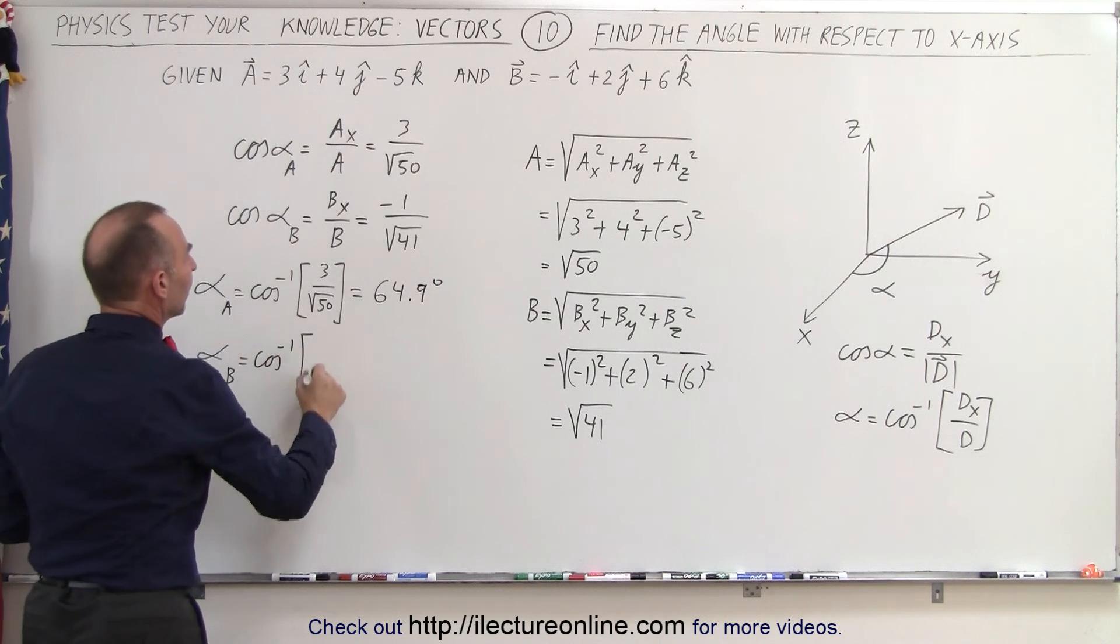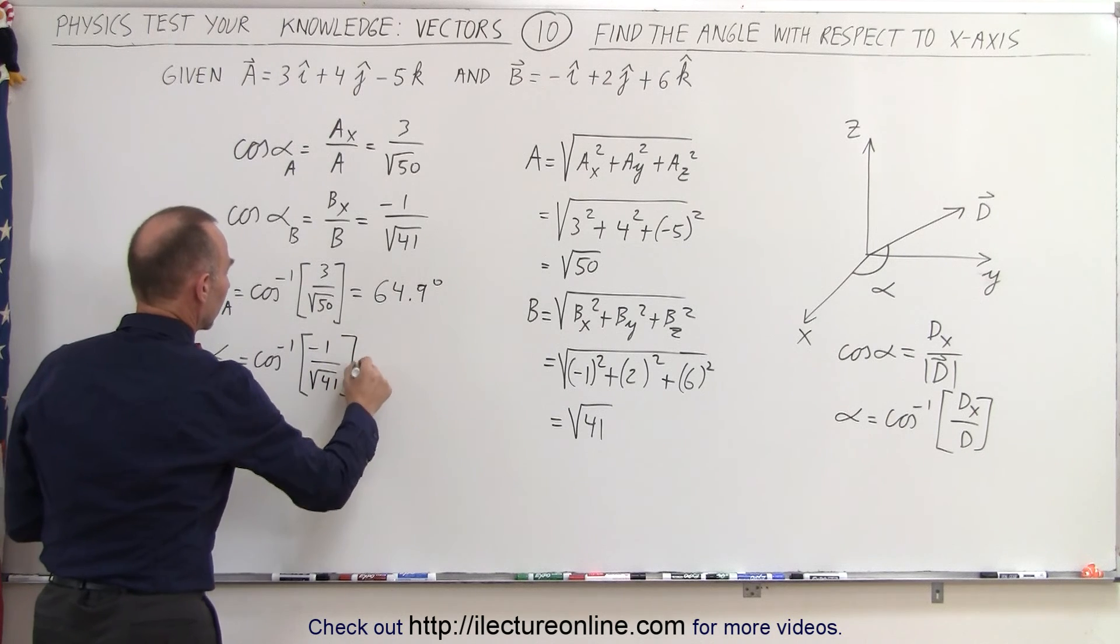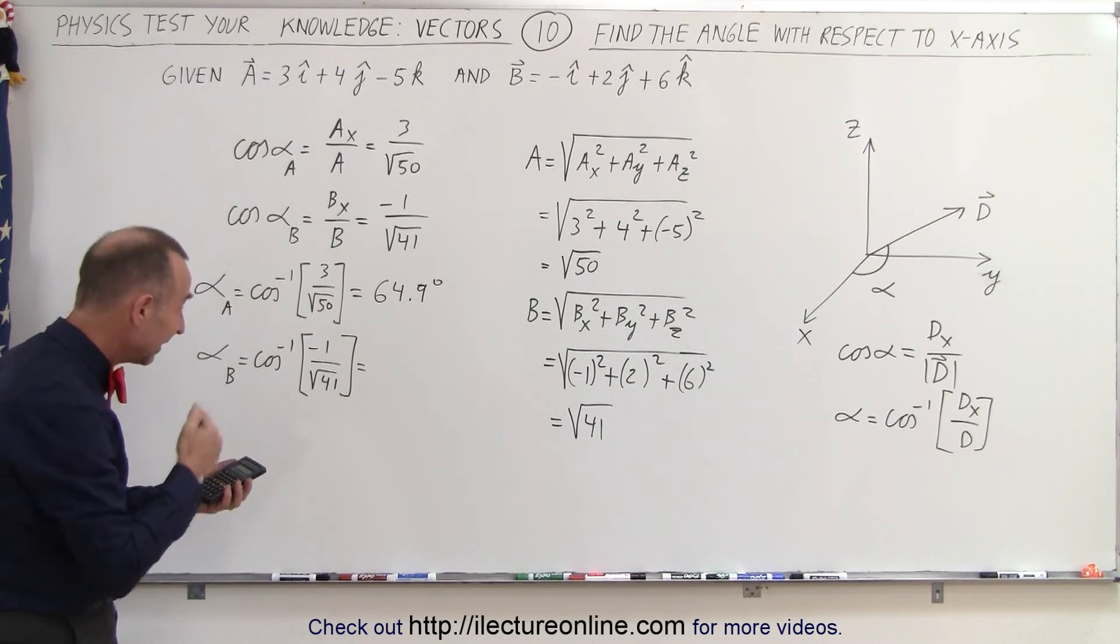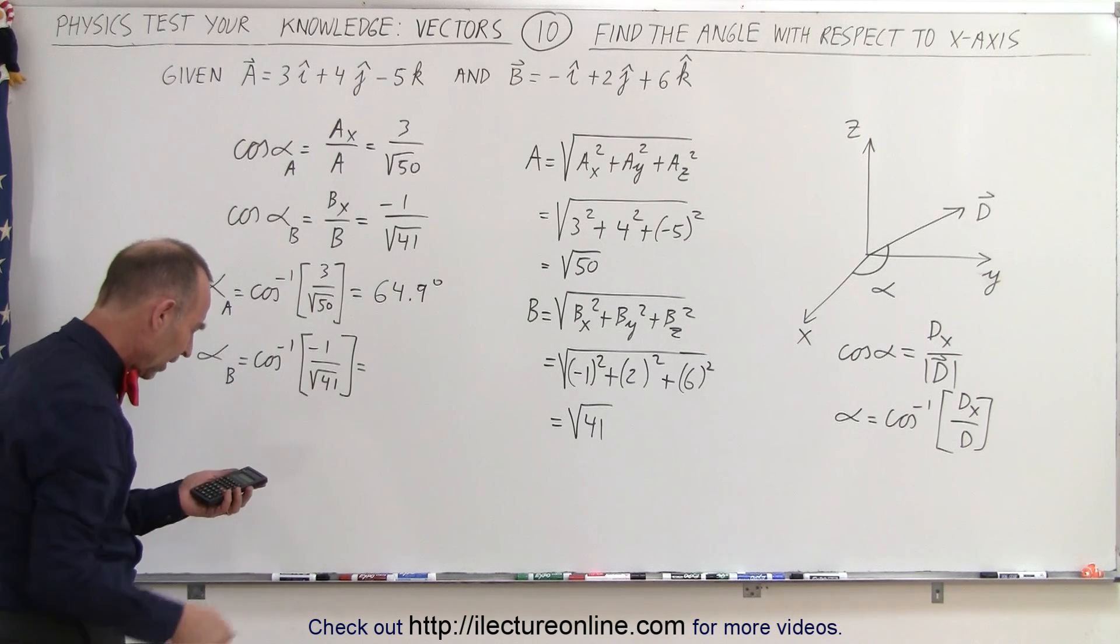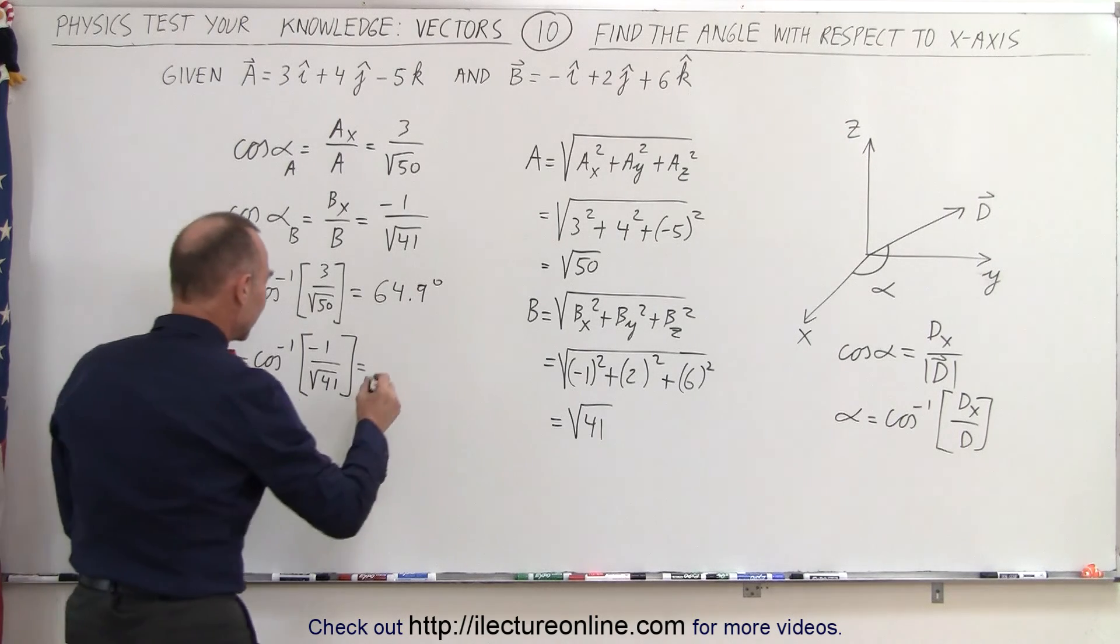Inverse cosine of negative 1 over the square root of 41. Let's see what that is equal to. So we have negative 1 divided by the square root of 41, inverse cosine and that would be an angle of 98.9, I'll make it 99.0 degrees.